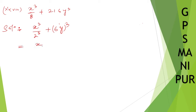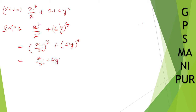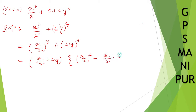So now this can be written as (x/2) whole cube plus (6y) whole cube. This is A cubed plus B cubed form, equal to (A plus B)(A squared minus AB plus B squared). Here A squared is (x/2) squared, minus AB, then plus B squared.